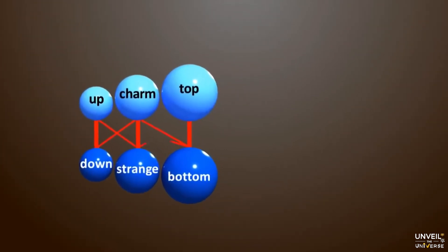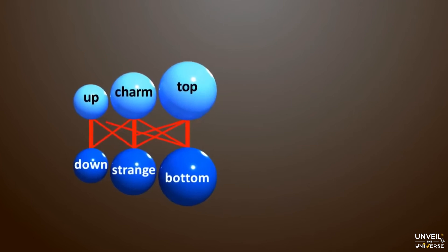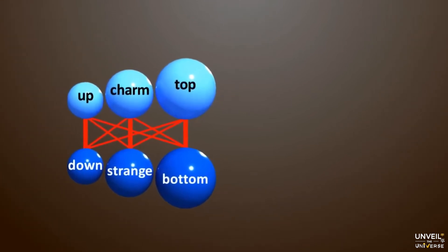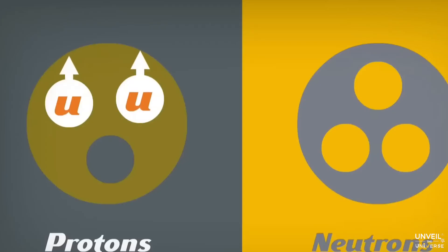In the quark category, there are six particles: up, down, charm, strange, top, and bottom. Quarks are the fundamental constituents of protons and neutrons, making them the smallest known particles to date.